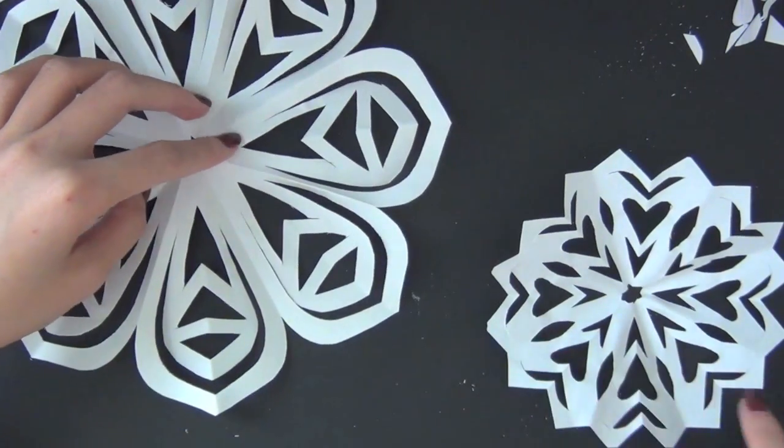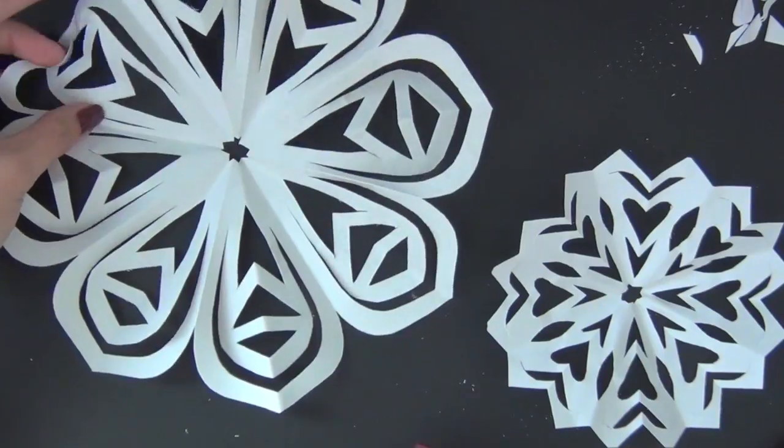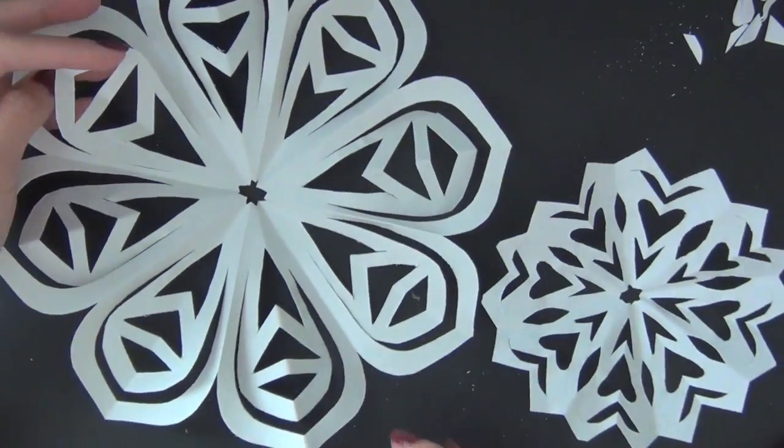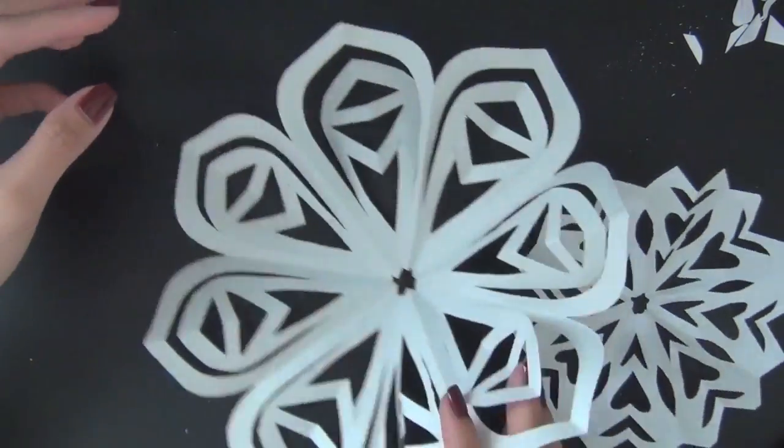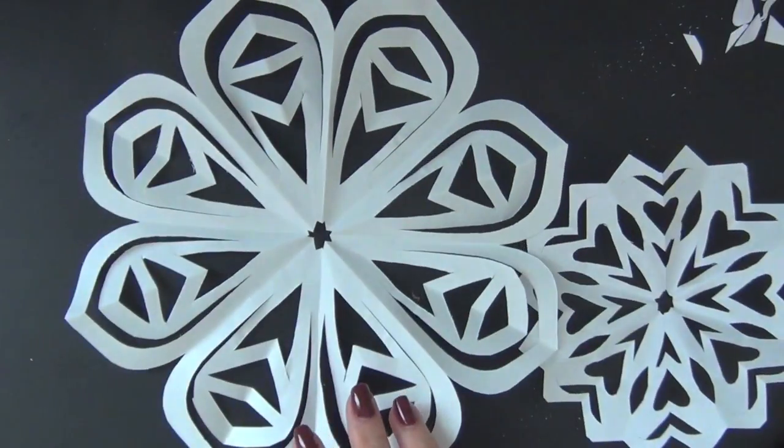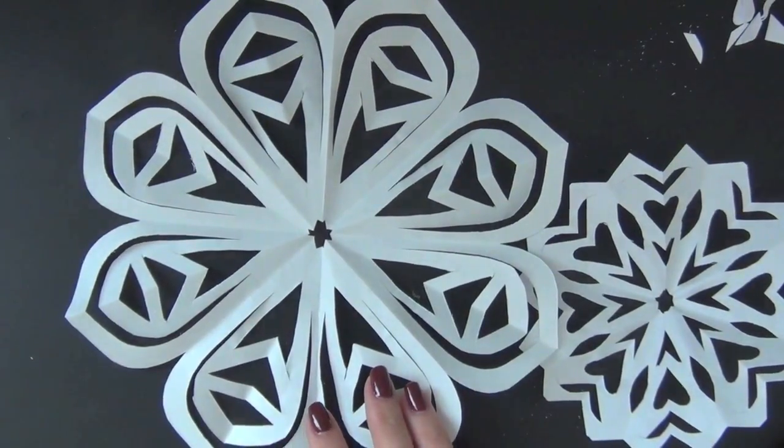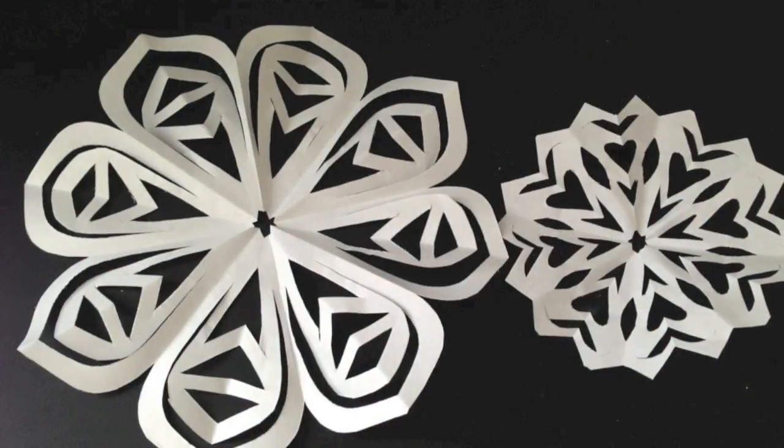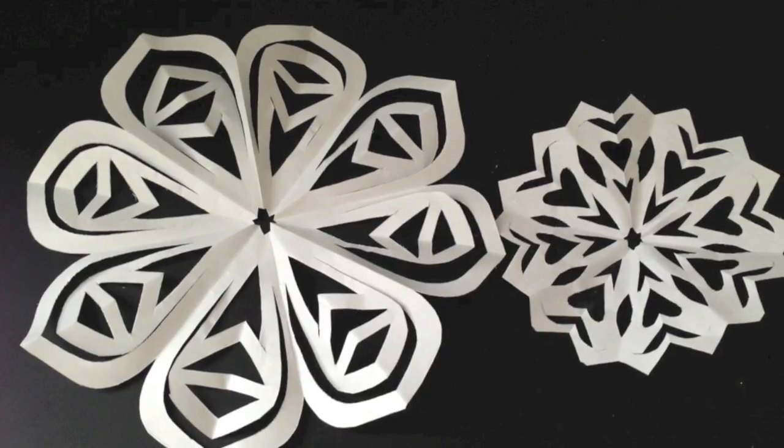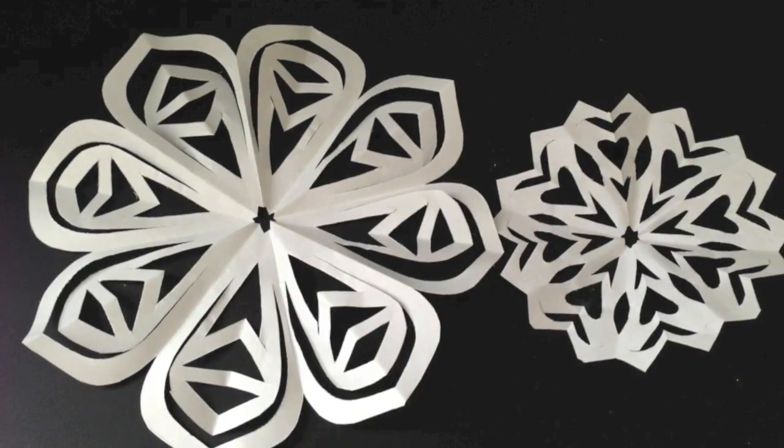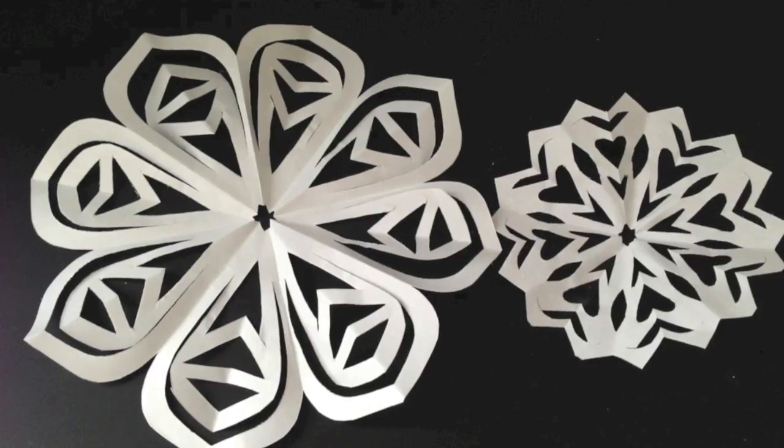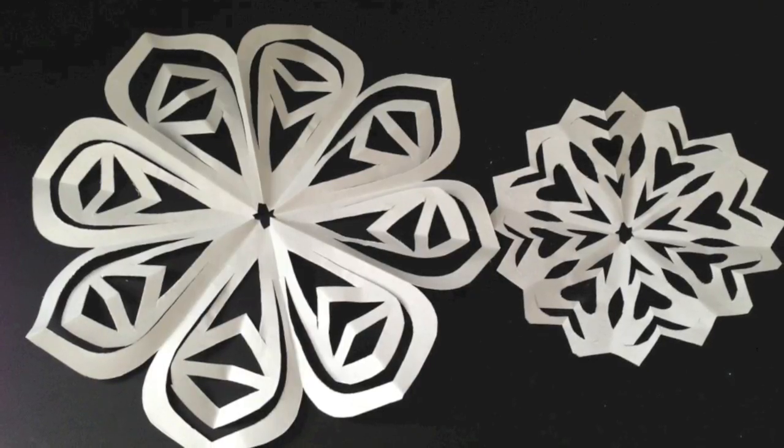You can also tape these on the windows as little snowflakes. You can cut them out of beautiful sparkling glitter paper or cover them with glitter. The possibilities are endless and I hope you give this tutorial a try to decorate your home this holiday season. Thank you so much for watching and I will see you soon. Happy holidays!